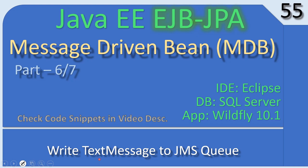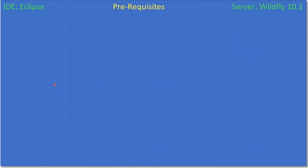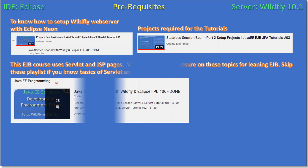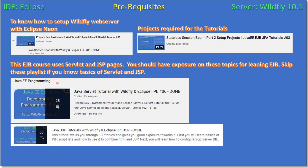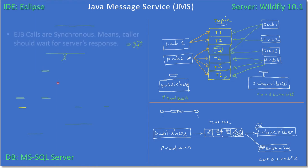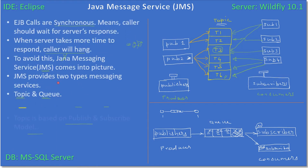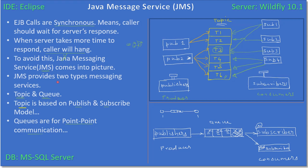Now we will move ahead with creating the JSP file. In the last video we created the form; now we will do the form field processing — retrieve the form field data, create a text message, and send that to the JMS queue. Here is a quick review of our previous videos.